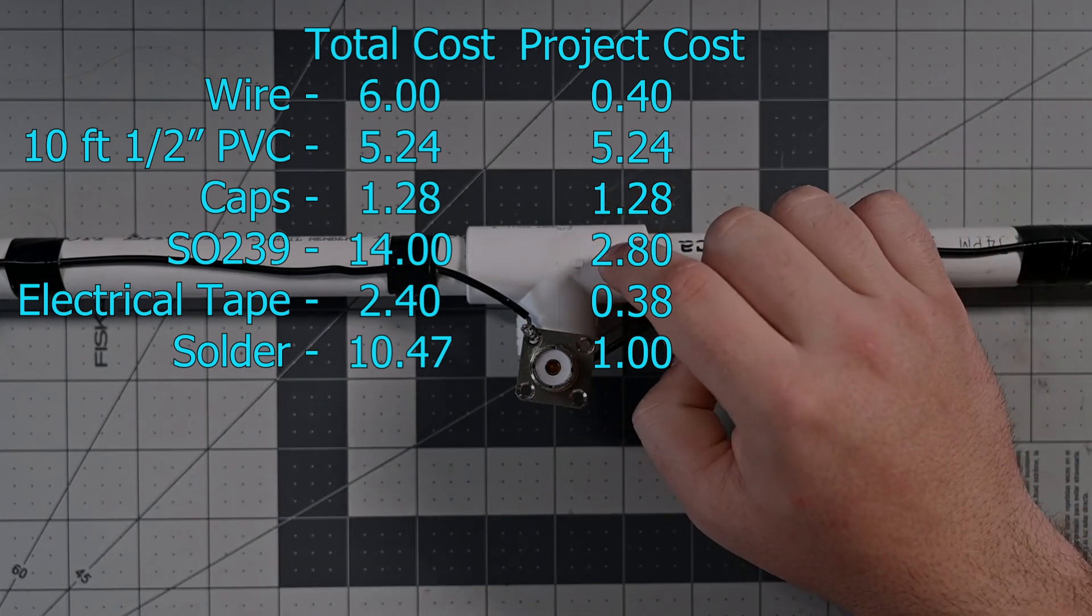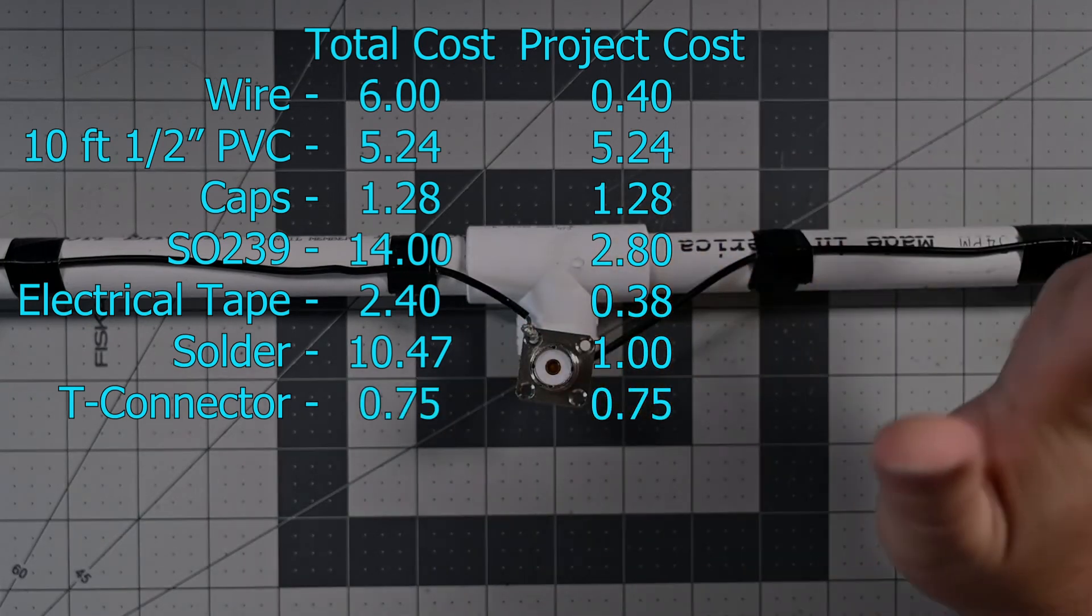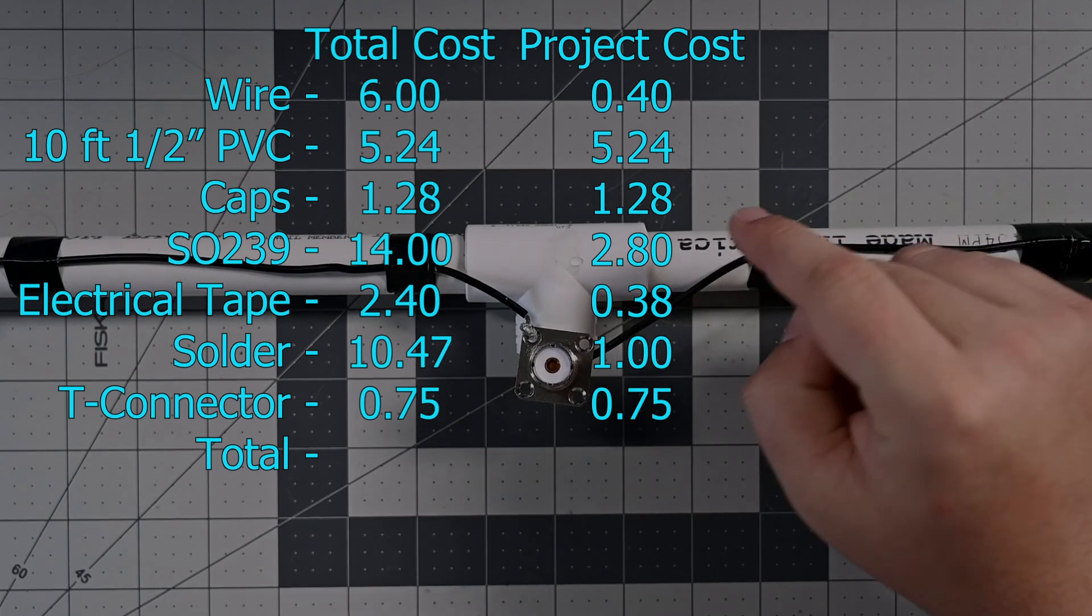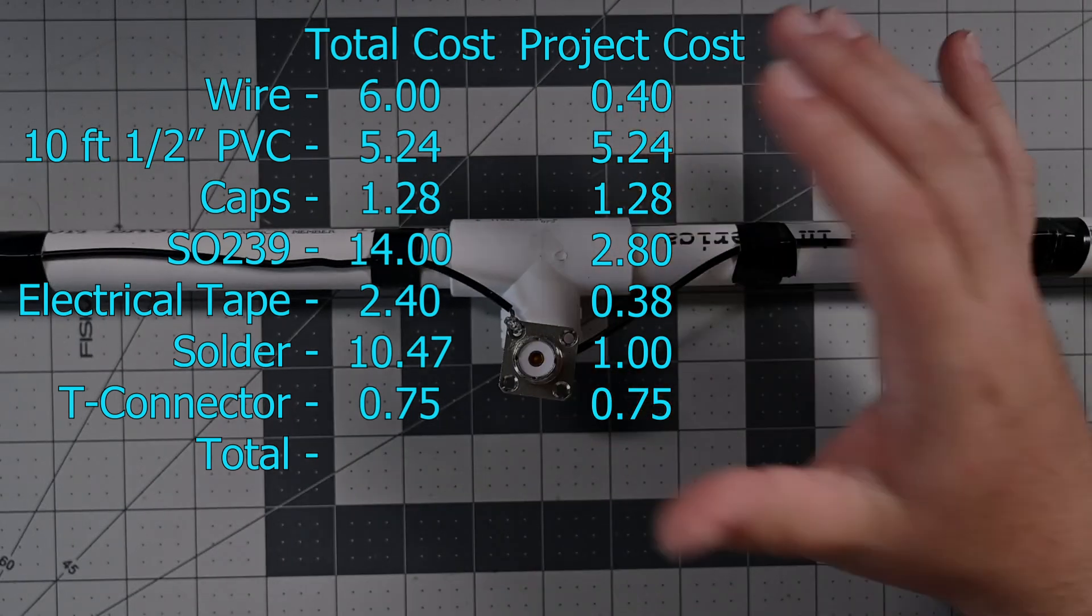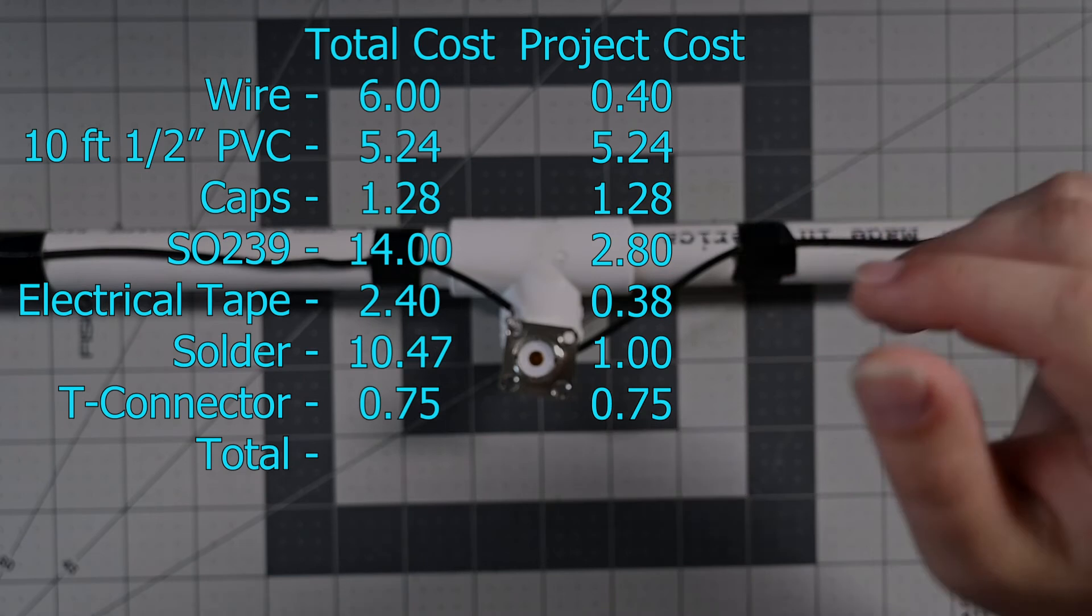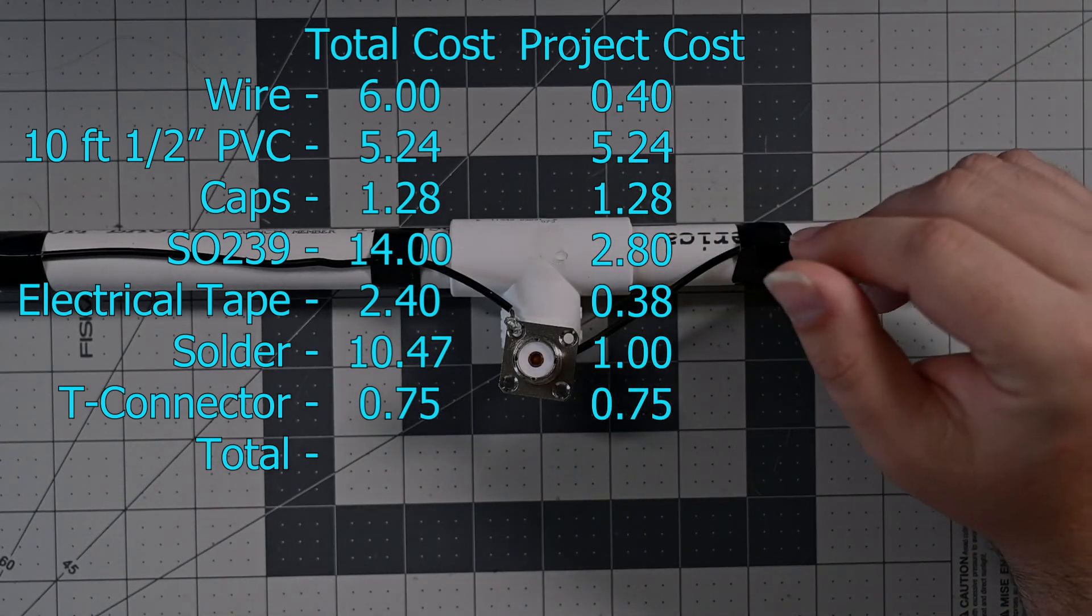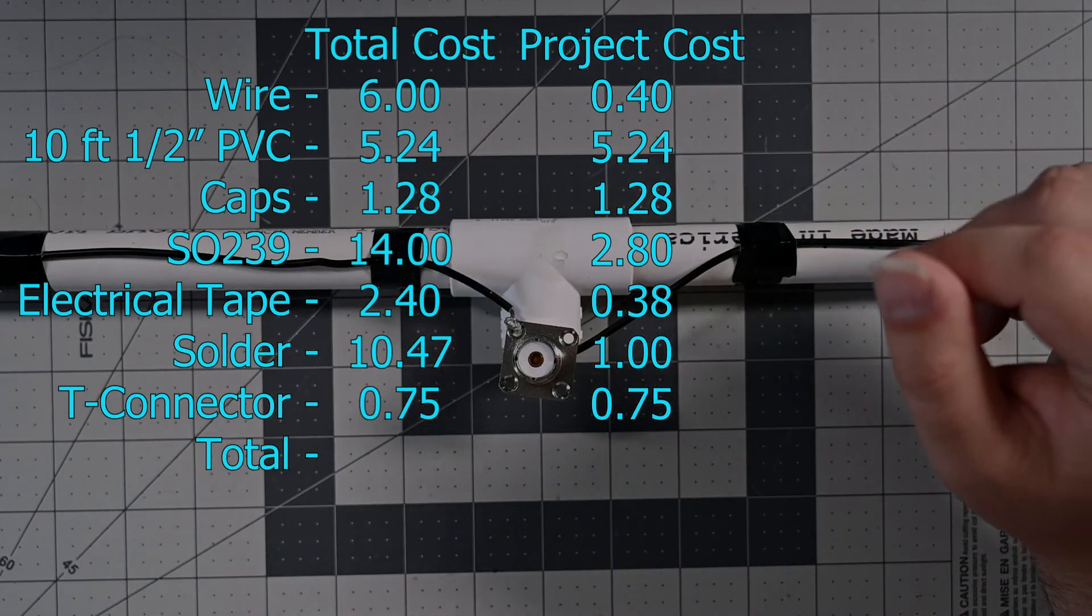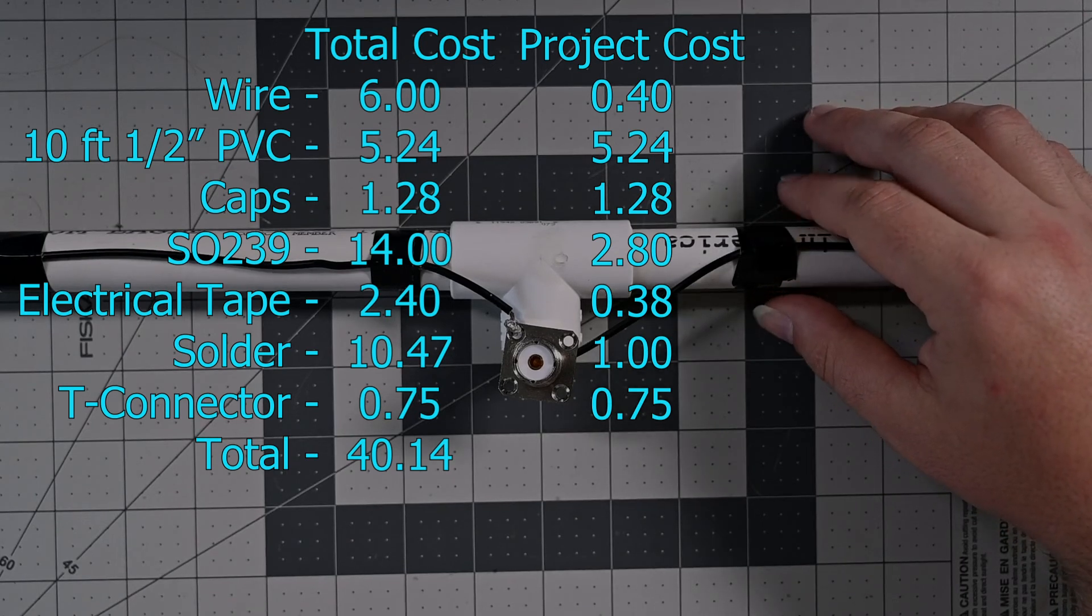The T. I forgot about the T. The T itself is $0.75. So, if you had to buy everything. If you had to buy a pack of these, a roll of wire, a roll of tape, the PVC, a spool of solder. I'm not calculating the tools. Obviously you might have to have a saw to cut the PVC with. You'll have to have a soldering iron. You might already have those. You might not. You can borrow those if you want to. If you calculate all of that, it comes out to $40.14 if you had to buy everything. The actual consumable portion of that is $11.85.